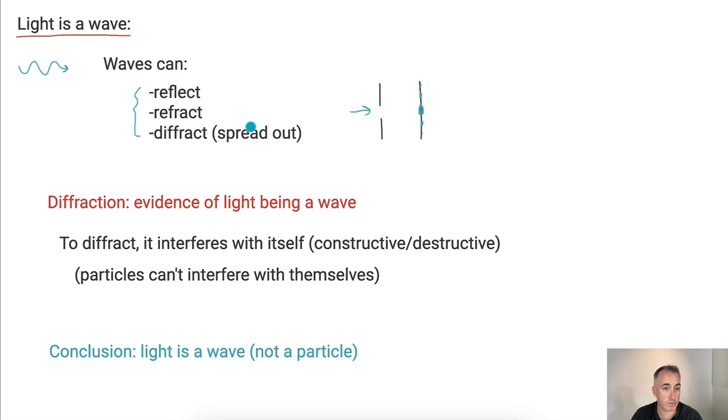Particles can't do this. Only waves can. So that means diffraction is actually evidence for light being a wave. In other words, light should be a wave.